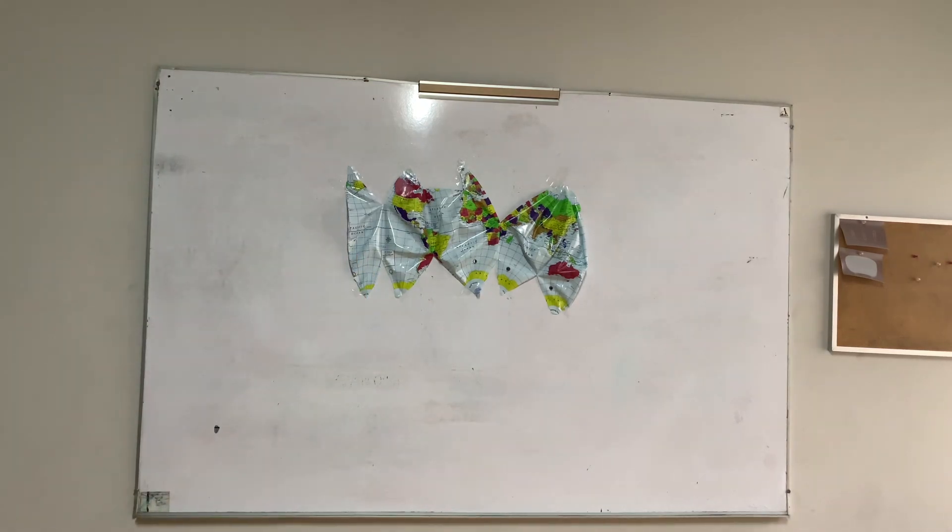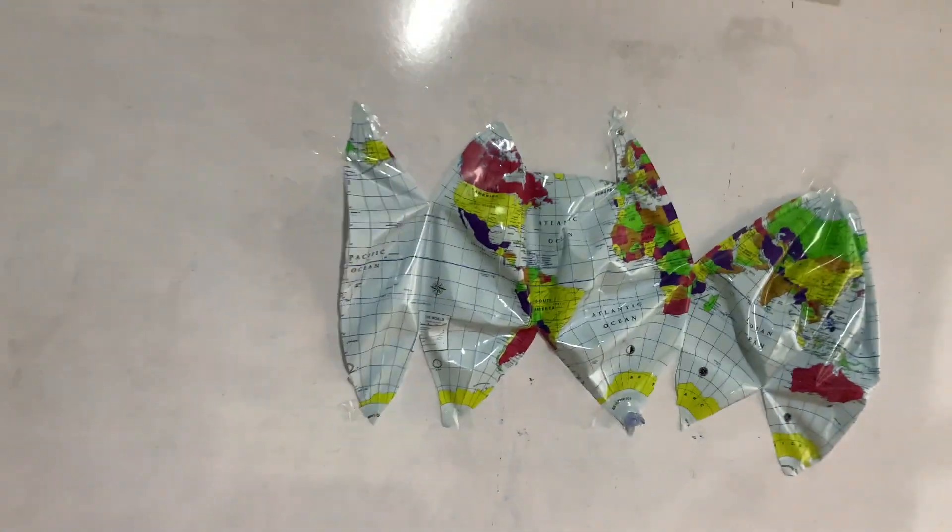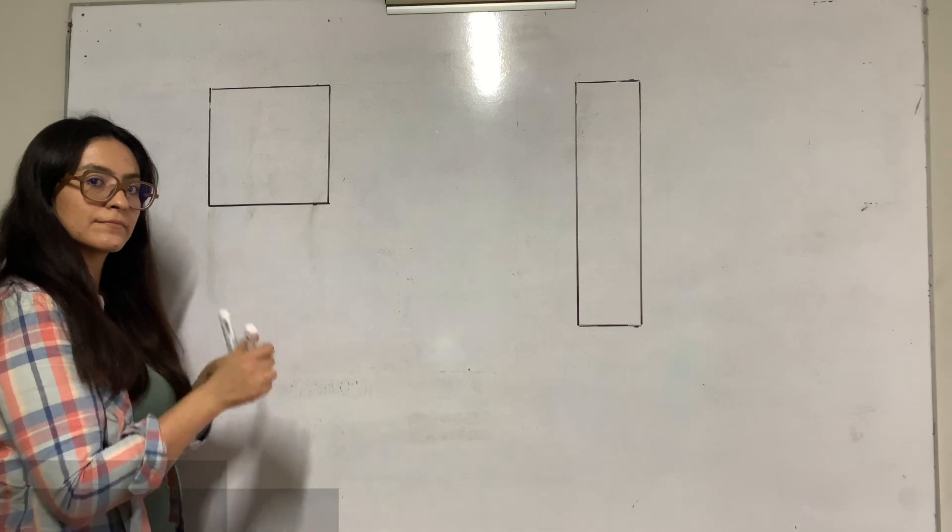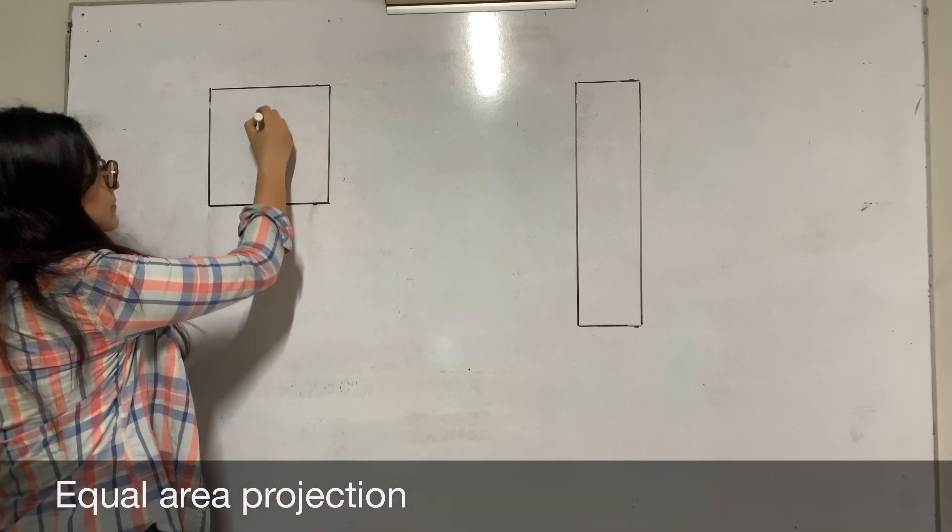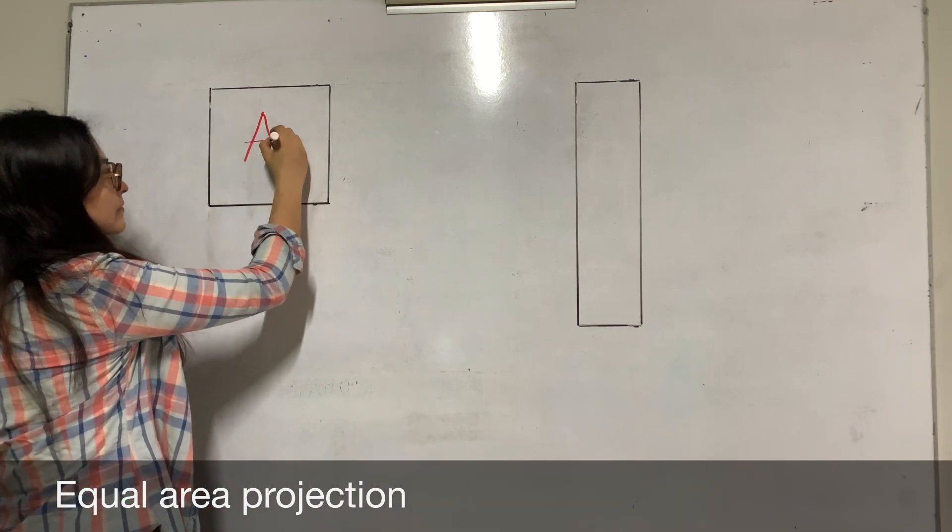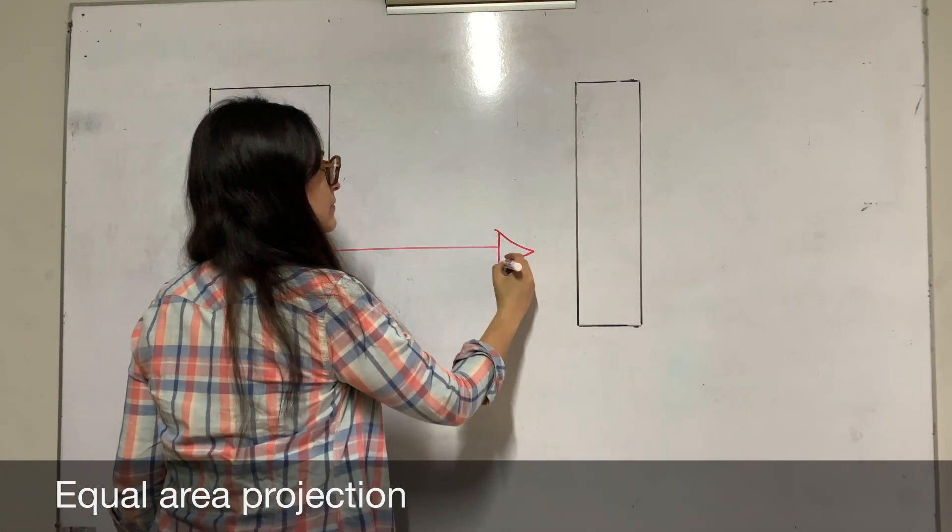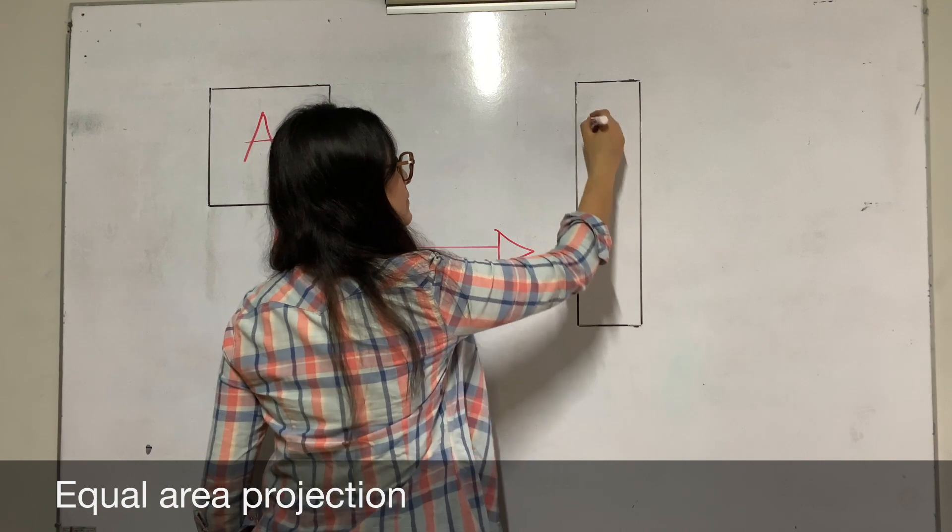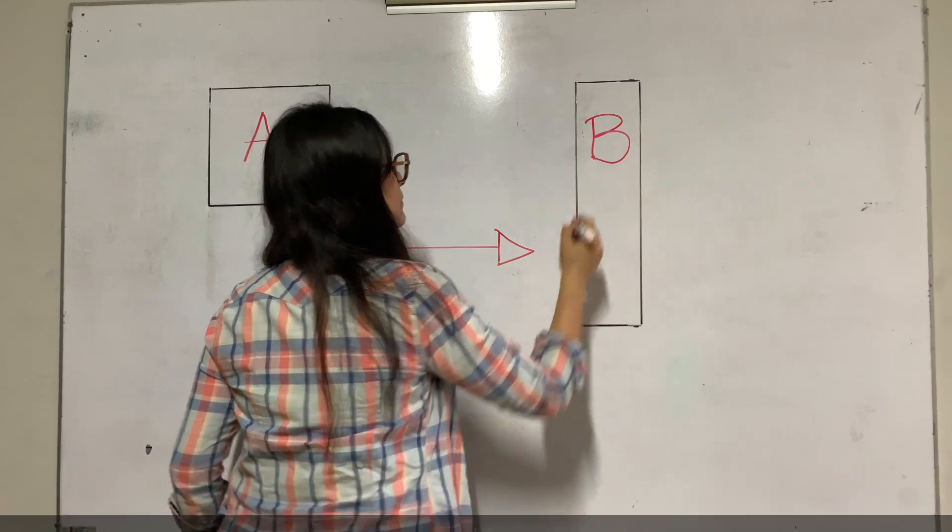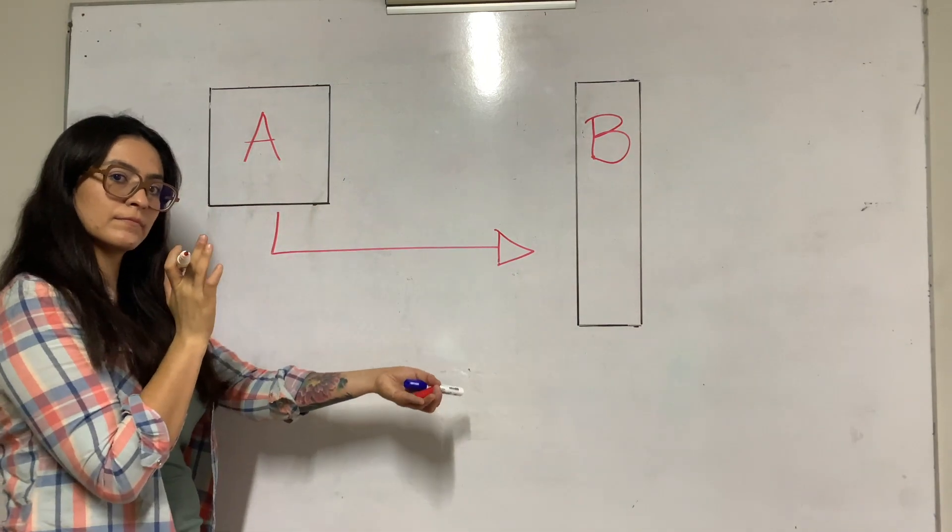To create maps, we use projections. Equal area projections preserve the area of displayed features. The size of a feature on a map is the same relative to its size on the Earth. In an equal area map, the shapes of most features are distorted.